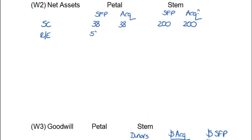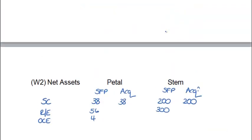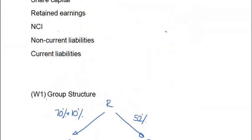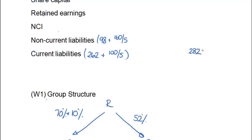This is literally cutting and pasting from the question into our workings. Put in separate rows for retained earnings and OCE — there isn't any OCE for STEM — but remember that STEM's figures are being shown in DINAS whereas Petal's figures are shown in dollars. Non-current liabilities are next. I've noticed we have a potential adjustment to non-current liabilities so I'm not going to put this in as a total, but I've not referenced current liabilities to anything.